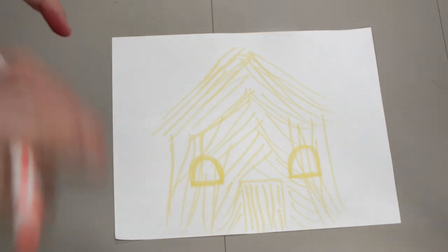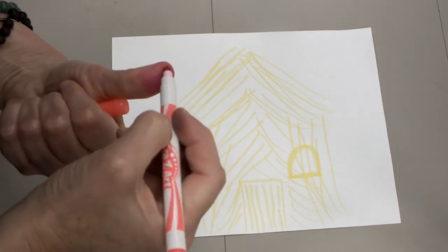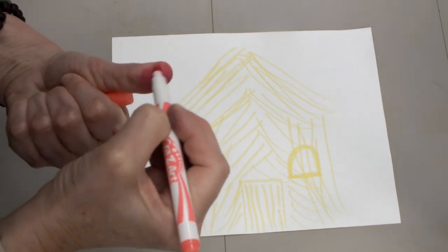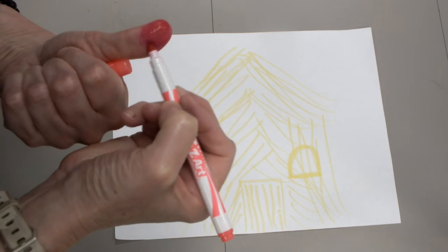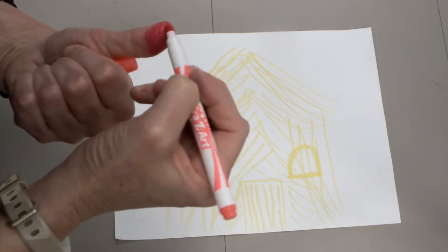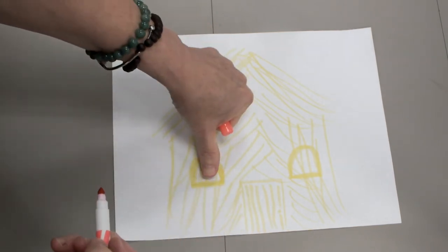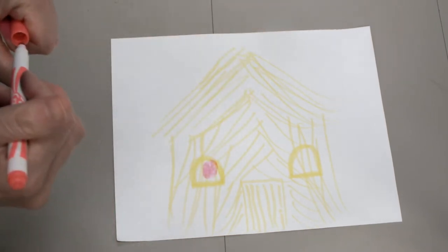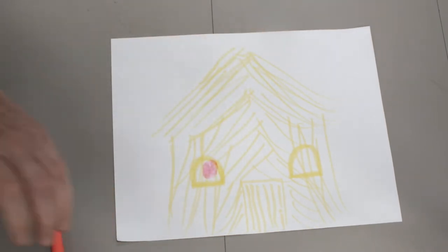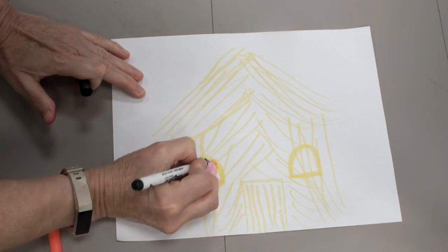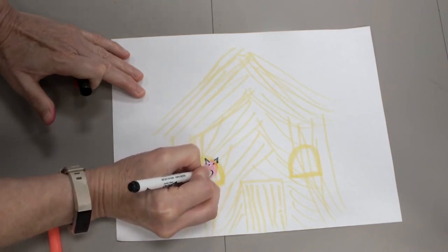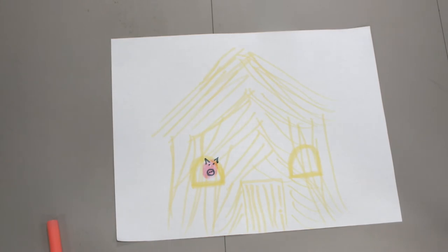Now what we're going to do is we're going to take a marker. Ask your moms and dads to help you or to make sure that this is okay but I have washable markers and they come off just fine with soap and water. So I'm going to draw my little pig in his house. There he is.